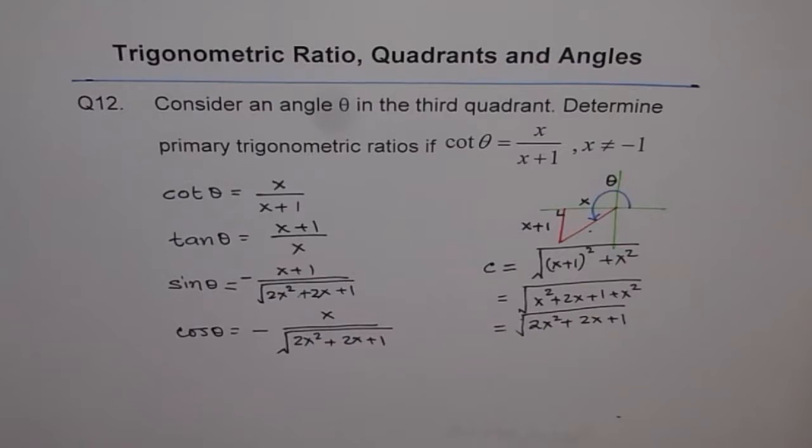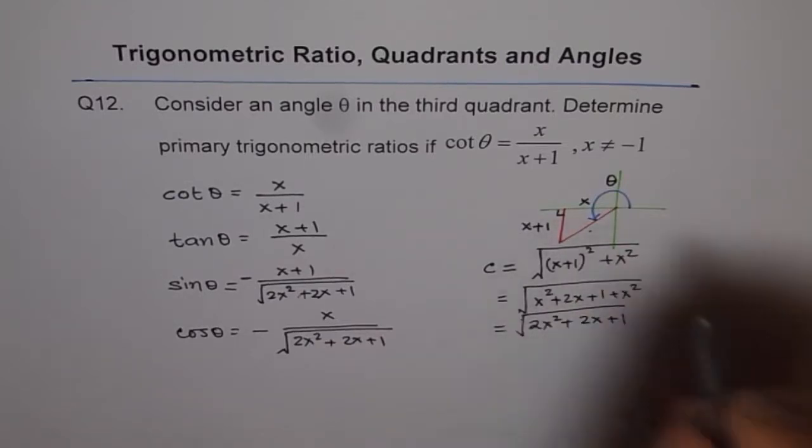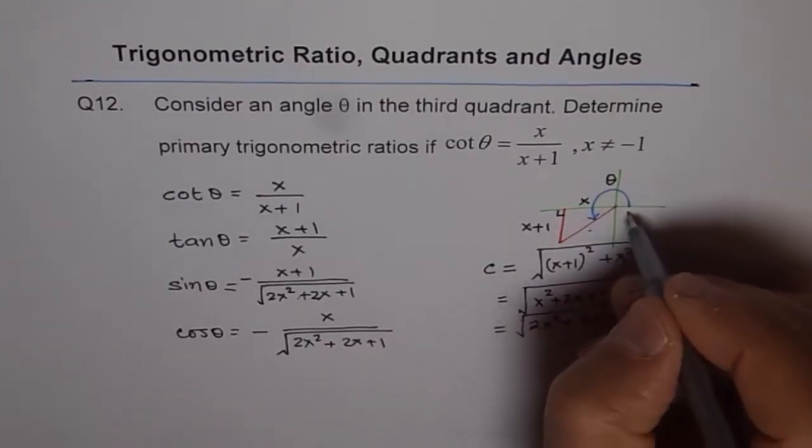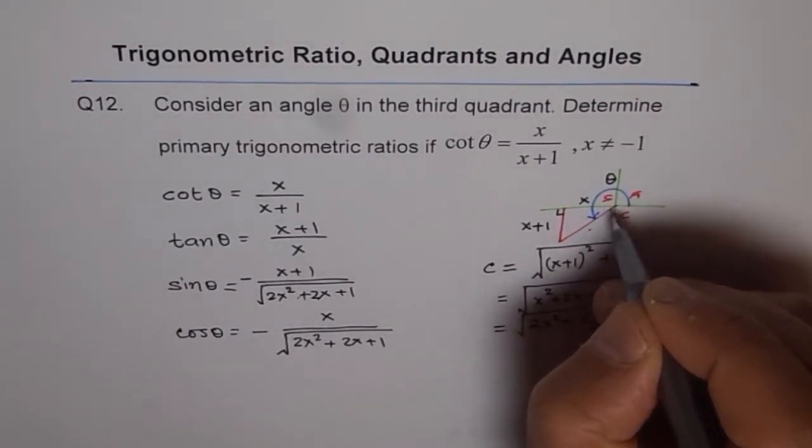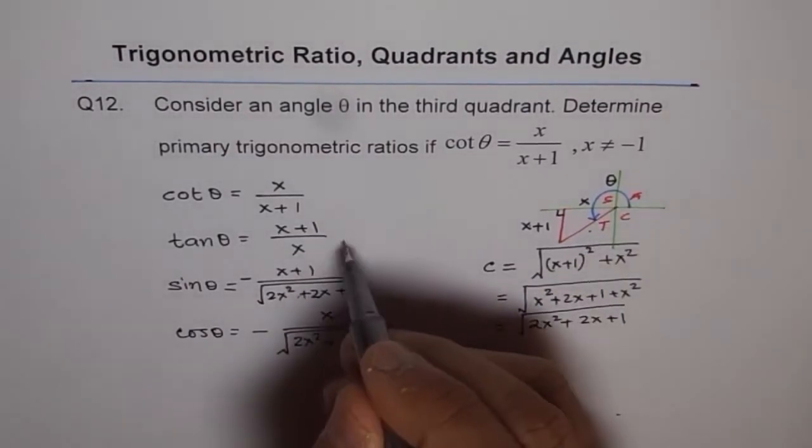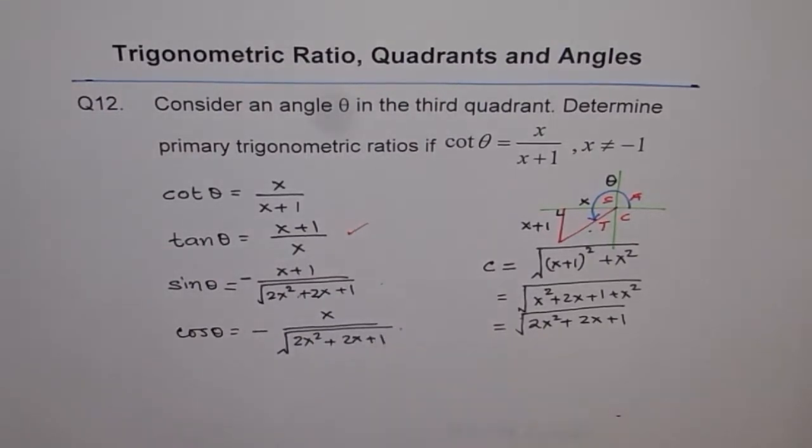In quadrant 3, remember CAST rule. It says cos is positive here, all are positive here, sine in this and tan. So only tan is positive, do you see that? And all others are negative. So that is how it is to be done.